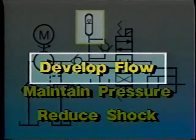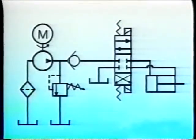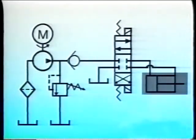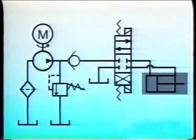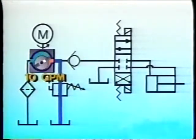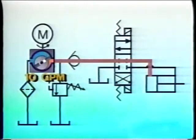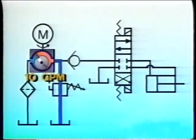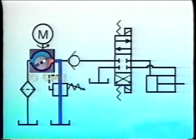Accumulators used to develop flow can increase flow when the demands of the system are greater than the pump can deliver. Suppose for example that a machine operates only once every 10 minutes but requires 10 gallons delivered in one minute. A 10-gallon-per-minute pump could be used, but it would idle for nine out of 10 minutes, work for a minute, then idle for another nine minutes. The pump and its motor would waste power idling.